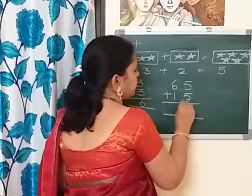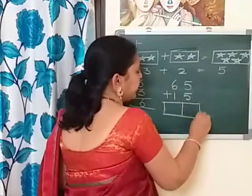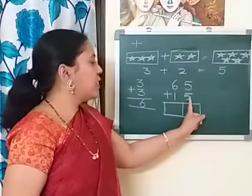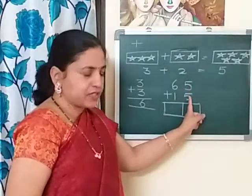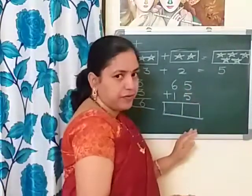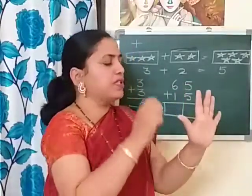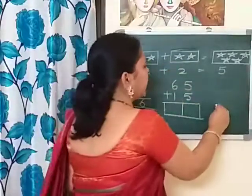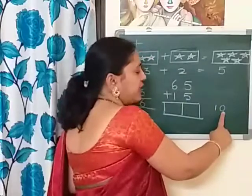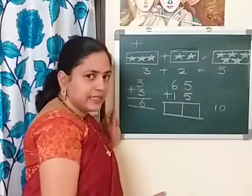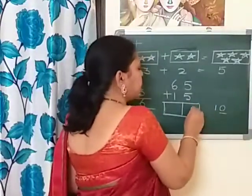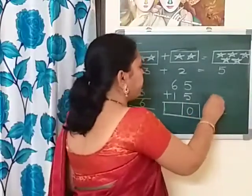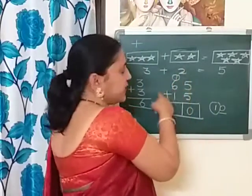Look here carefully, students. We will add the ones place digit first. Five plus five — what comes after five? Counting forward: six, seven, eight, nine, ten. We got a two-digit number: one and zero, which is ten. So we put zero in the ones place here, and this one we carry over to the next column.